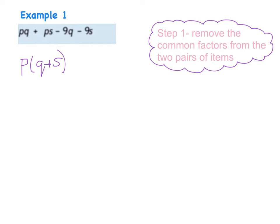And if I take a look at the second two expressions here I have minus 9q and minus 9s and obviously straight away I can see that the common factor here is minus 9. So I can place this as minus 9 and I'm left with q plus s. And the reason why I do that is if we just highlight minus 9 times q is minus 9q and a minus times a plus gives me a minus and that's minus 9s.